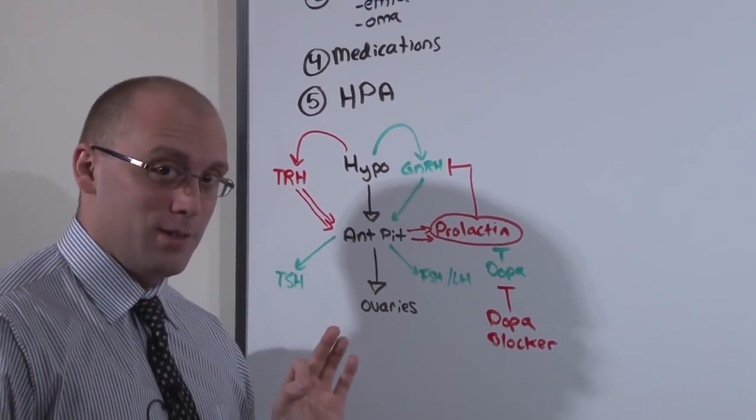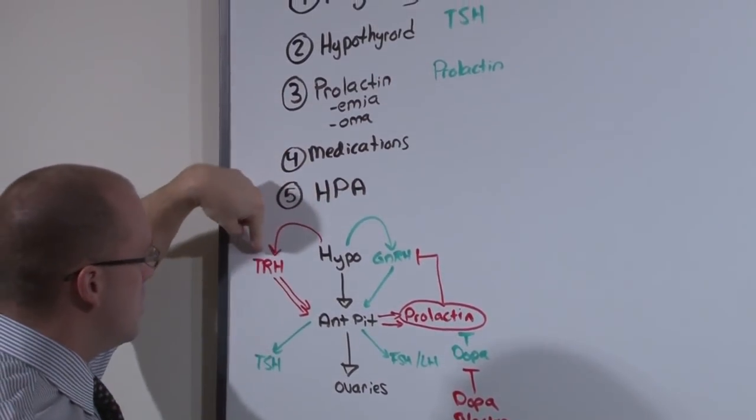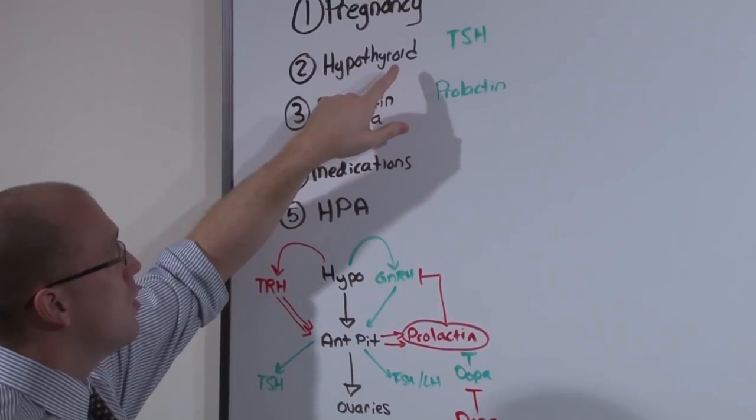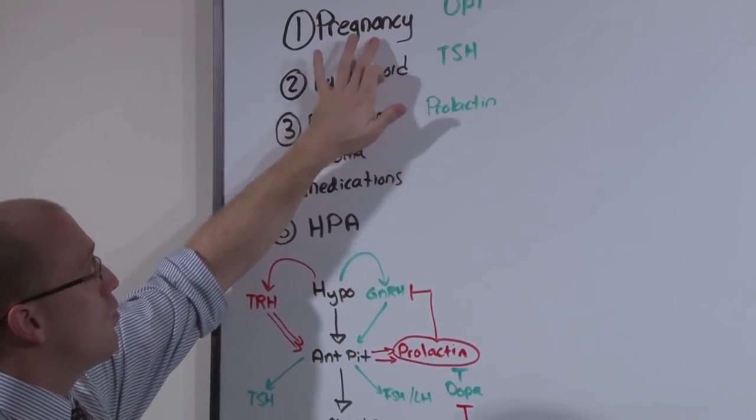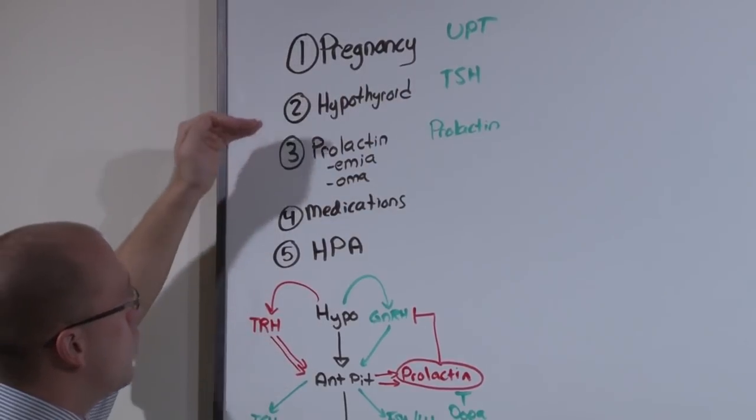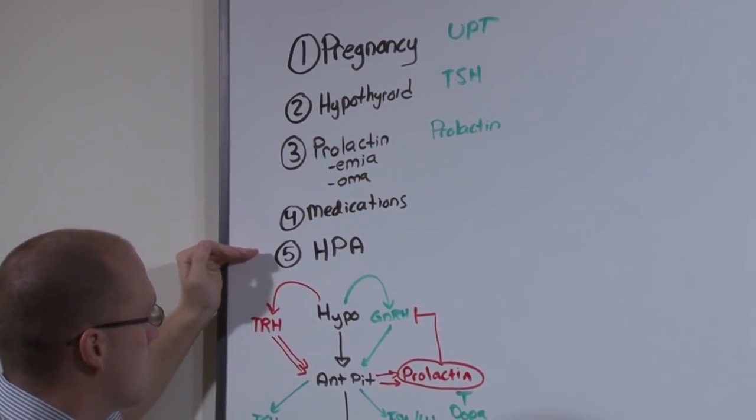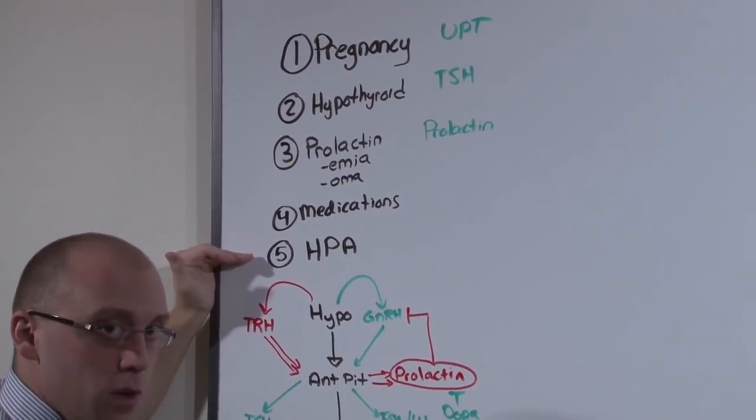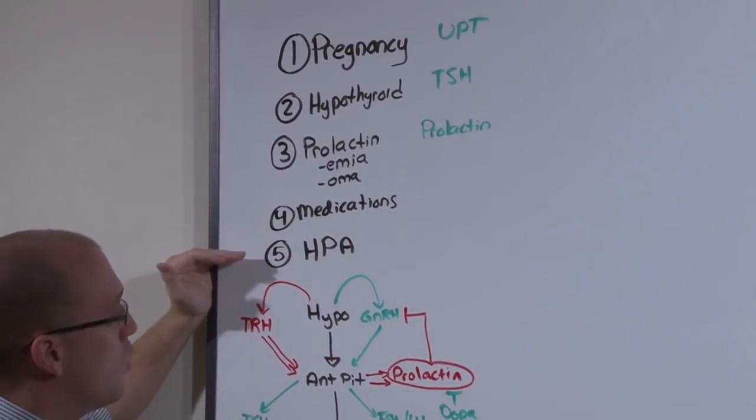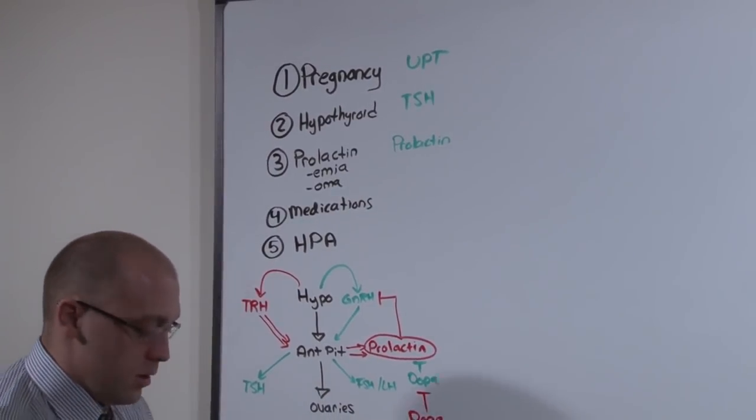In addition, hypothyroidism on its own, even without elevations in TRH, can cause secondary amenorrhea. And pregnancy is your most likely cause. We've covered the first four. The rest of the lecture is going to be dedicated to an endocrinology lecture about the hypothalamic pituitary axis. To understand what's going to happen with the algorithm, we're going to re-review the HP axis.